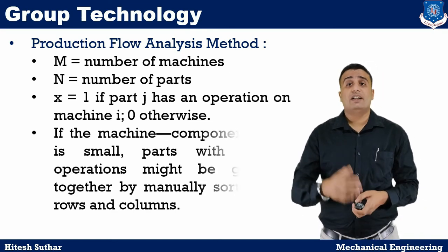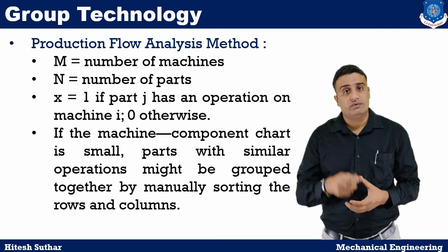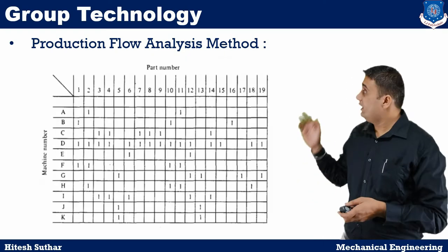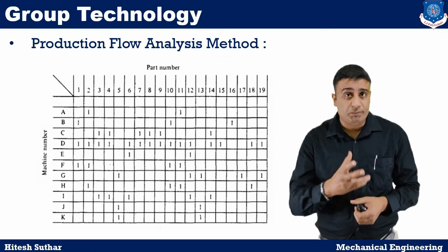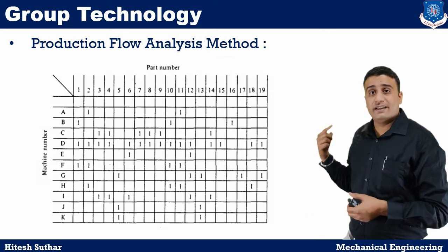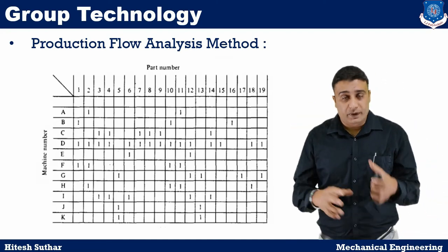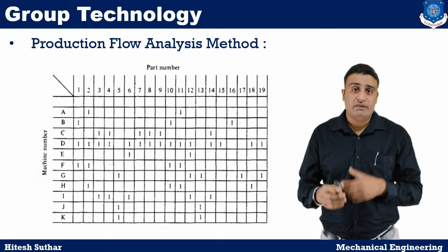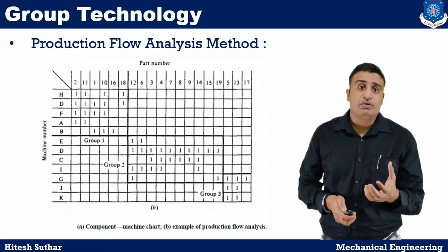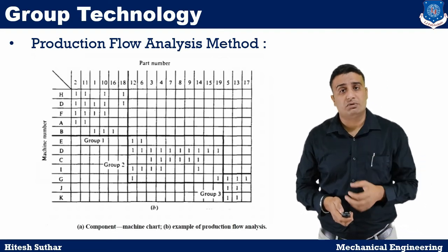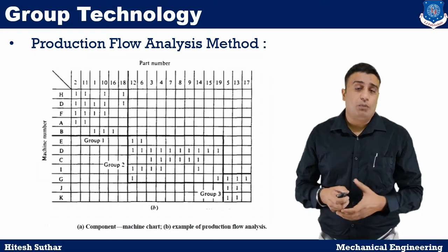If the machines and component chart is small, parts with similar operations might be grouped together by manually sorting the rows and columns. As we see in this figure, the table shows a PFA — production flow analysis — used to form the part families. The x-axis shows the number of parts and the y-axis represents the machines. But when the number of machines and operations are more, this becomes a very complicated job.